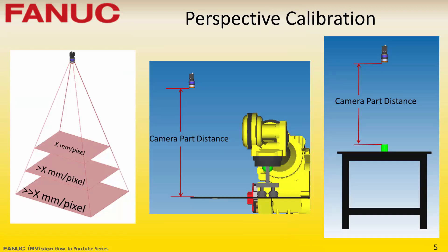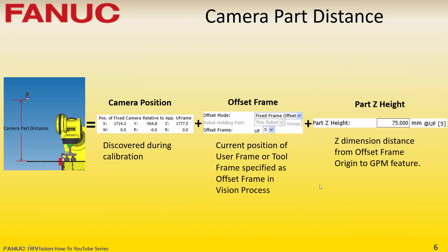Using perspective calibration allows IRVision to calculate accurate 2D positional information for parts regardless of their distance from the camera. Because the millimeters per pixel value changes with the camera-to-part distance, IRVision needs to know what this distance is. IRVision calculates the camera-to-part distance by knowing the camera position, which is discovered during calibration, the current position of the offset frame, and the part Z height, which is entered by the user.